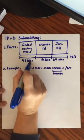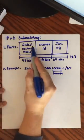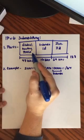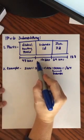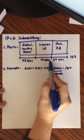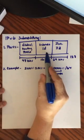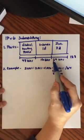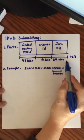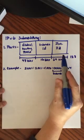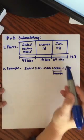The first 48 bits is the global routing prefix, the next 16 bits is your subnet ID, and the last 64 bits is your interface identifier.